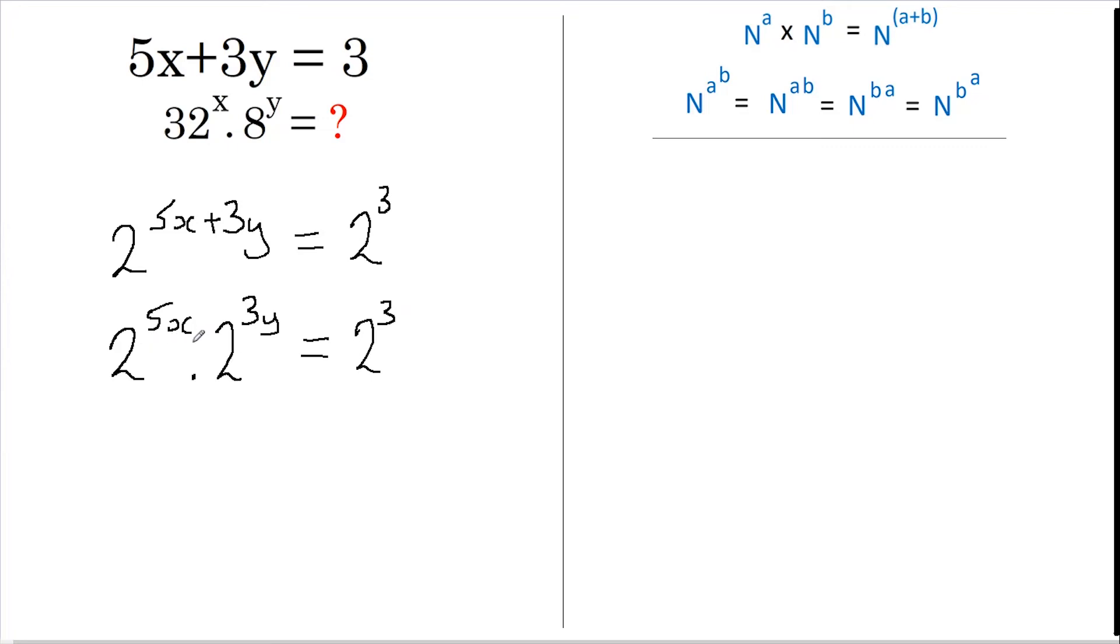Now when we have a power that is made up of two numbers multiplied together, in this case 5 and x, and in this case 3 and y, we can rewrite this as 2 to the power of 5 to the power of x, and we can write this as 2 to the power of 3 to the power of y. This is as per this rule here. This still equals 2 to the power of 3.